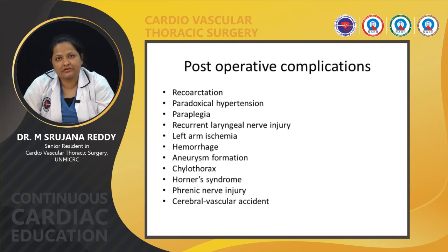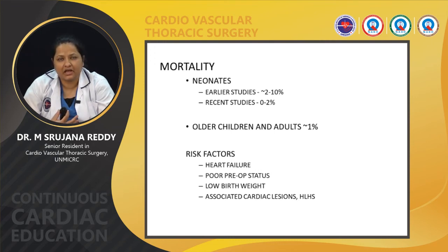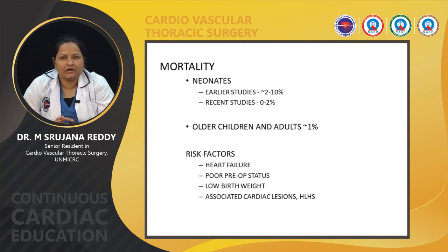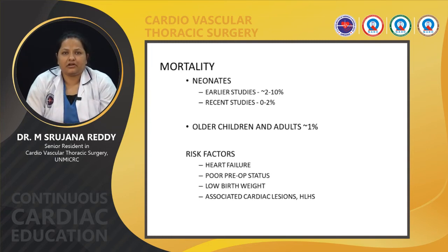Regarding specific complications and mortality, earlier studies in neonates showed around 2 to 10%, but recent studies have shown 0 to 2% mortality. In older children and adults, mortality is approximately 1% or less. Risk factors contributing to mortality include a very poor preoperative status, heart failure, low birth weight, and associated cardiac lesions like HLHS.